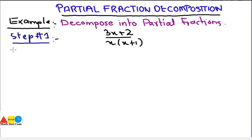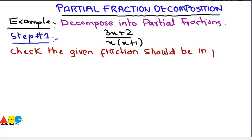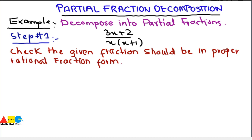Step number 1 is: check the given fraction should be in proper rational fraction form. We have already discussed the concept of proper rational fraction form, in which the degree of the denominator must be greater than the numerator. So we have to check whether the degree of the denominator is greater than the numerator. If yes, it is in proper form; if not, you have to convert it using the long division method. In our case, the power of x is 2 in the denominator and 1 in the numerator, so it is already in the proper rational fraction form.